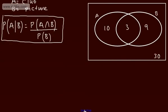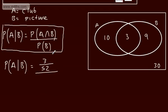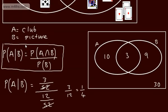If we just work this out using the formula: the probability of A given B — that A is a club given it's also a picture — is the probability of A intersection B, which is 3 out of 52 cards, divided by the probability of B, which is 12 out of 52 cards. The 52s cancel, leaving us with 3 over 12, which is 1 over 4.